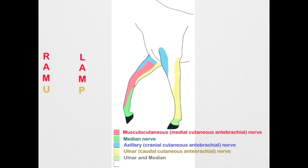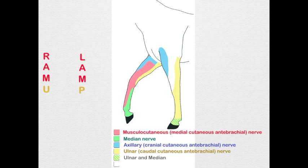The ulnar nerve gets the caudal aspect of the antebrachium via the caudal cutaneous antebrachial nerve. It also gets the caudal and lateral aspect of the metacarpus. And remember, because the palmar branch blends with the lateral palmar nerve, the lateral palmar digital nerve is going to get the lateral part of the digit — so there's a combination of ulnar and median nerve on the digit on the lateral surface.